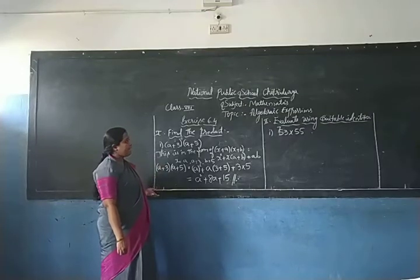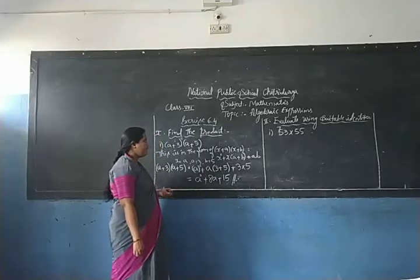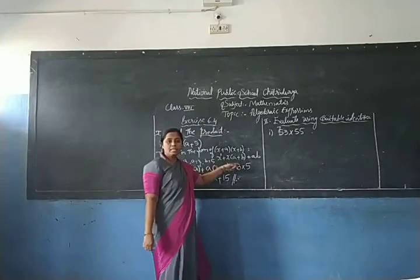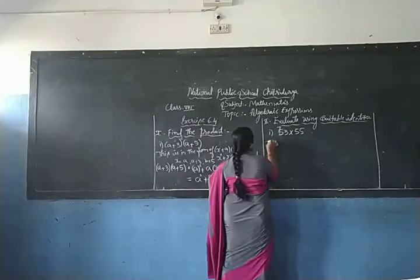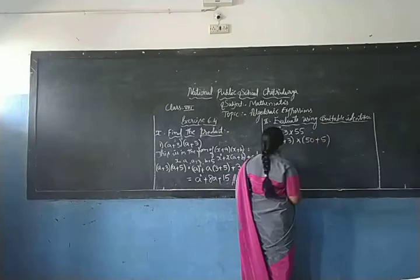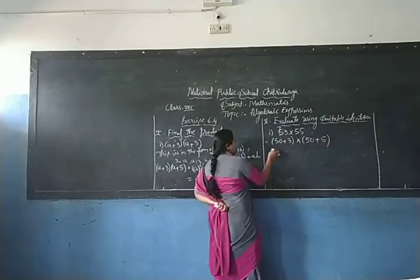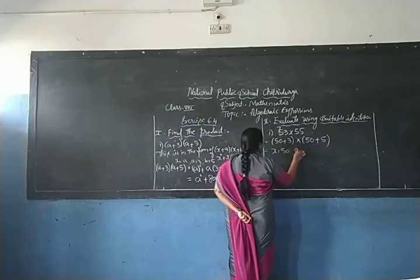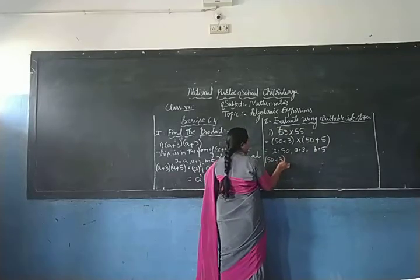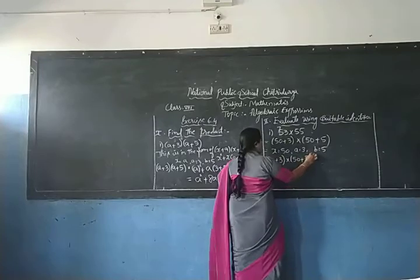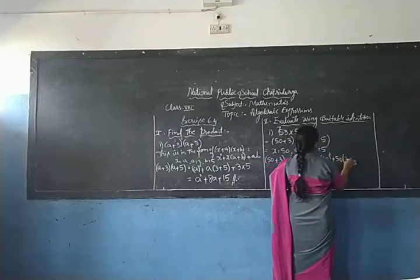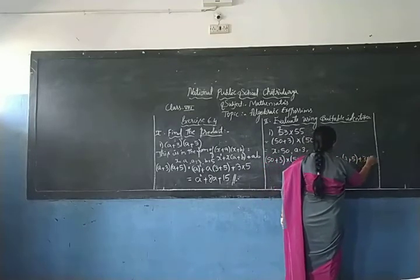Now in the second problem of this exercise, we evaluate 53×55 using a suitable identity. We write 53 as 50+3 and 55 as 50+5. This is in the form of (x+a)(x+b) where x = 50, a = 3, and b = 5. So 53×55 = (50+3)(50+5) = 50² + 50(3+5) + 3×5.